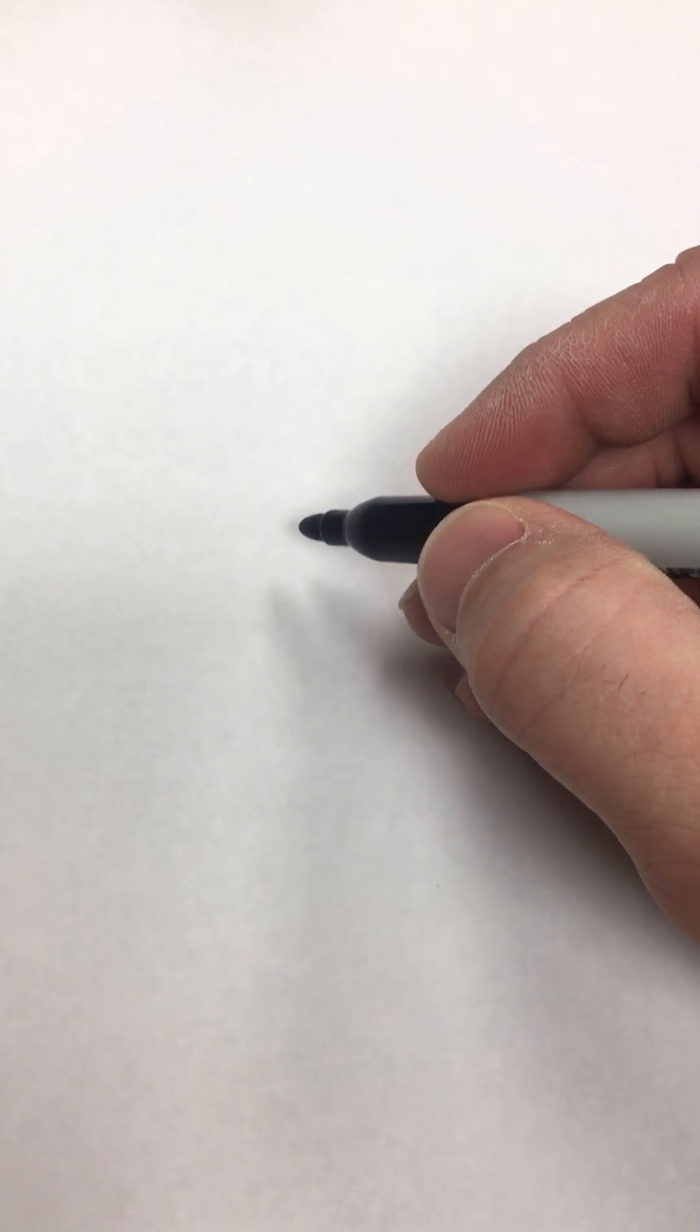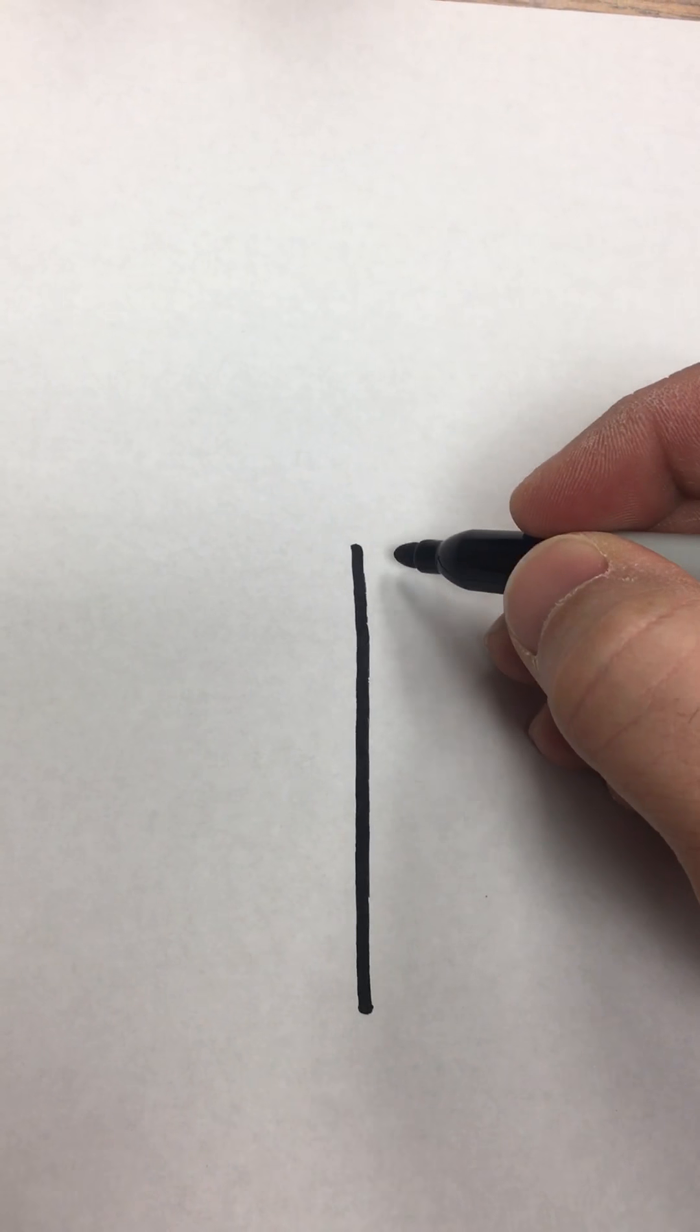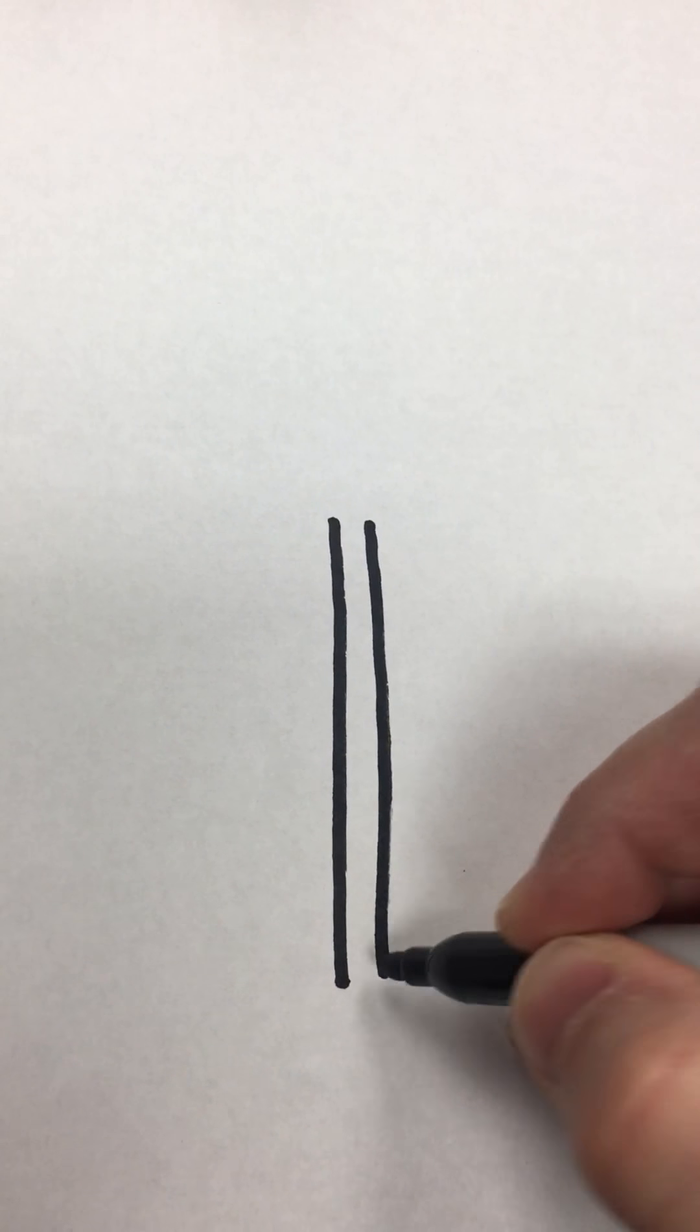Today I'm going to show you how to draw the flimsy flail pickaxe on Fortnite. I'm going to start with some vertical lines, the main part of the pickaxe handle.